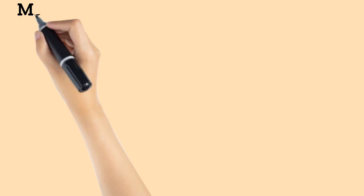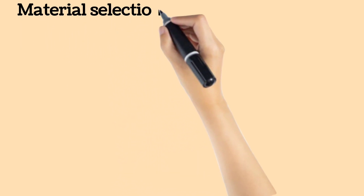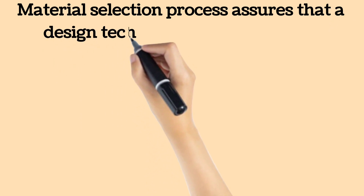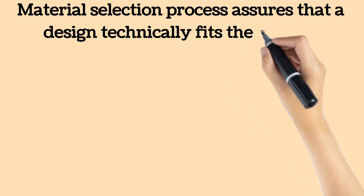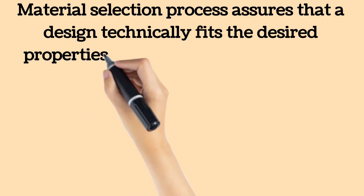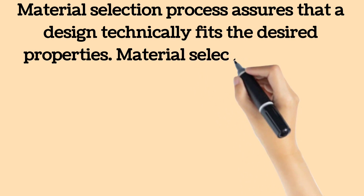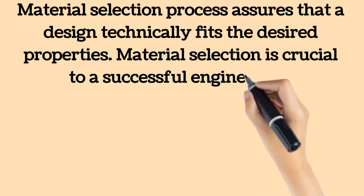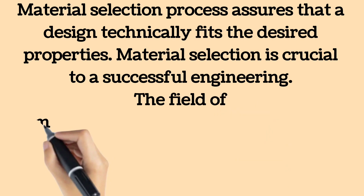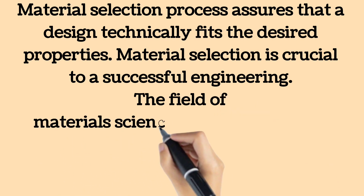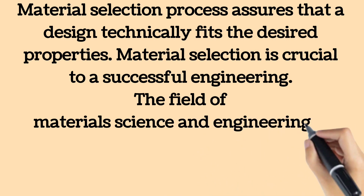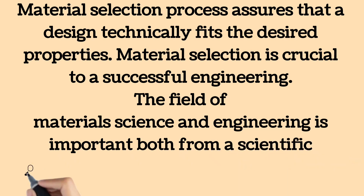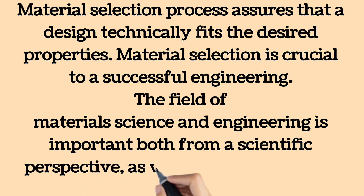To ensure the integrity of design and prevent any susceptibility to product failure, the material selection process assures that a design technically fits the desired properties. Material selection is crucial to a successful engineering design process. You want your product to be as strong and as long-lasting as possible. There are also safety implications to consider, as dangerous failures arising from poor material selection are still an all-too-common occurrence in many industries. The field of materials science and engineering is important both from a scientific perspective as well as for applied fields, because usage of the appropriate materials is crucial when designing systems.